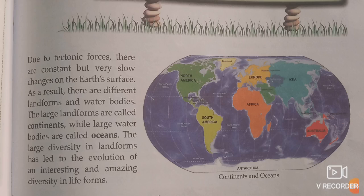The tectonic force is slow, but on our Earth's surface we have continuous changes. As a result, there are different landforms and water bodies. The large landforms are called continents, and the large water bodies are called oceans.